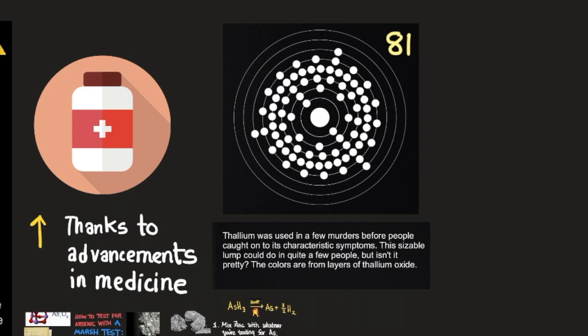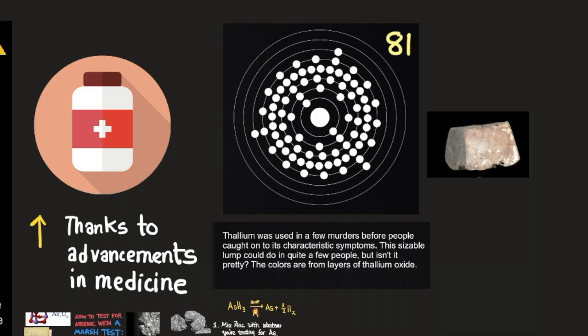Thallium was used in a few murders before people caught on to its characteristic symptoms. This sizable lump could do in quite a few people, but isn't it pretty? The colors are from layers of thallium oxide, or TL2O3, two atoms of thallium combined to three atoms of oxygen.